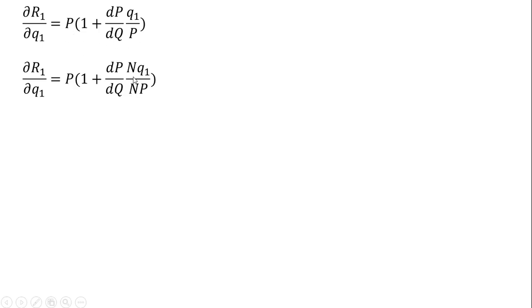Now the important part: we're going to multiply the numerator and denominator of this last term in parentheses by N, the number of firms. N divided by N is just 1, so we can do that algebraically.